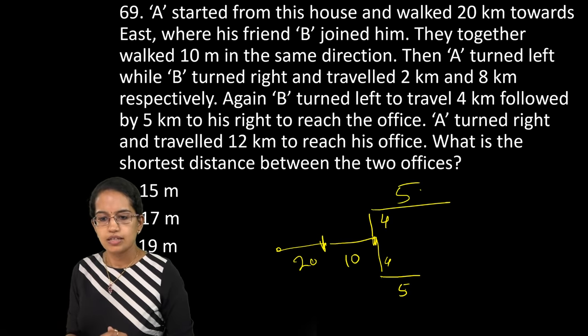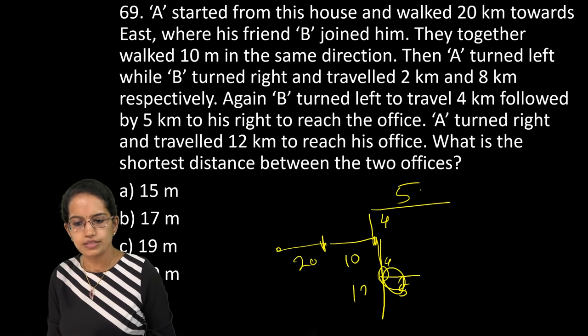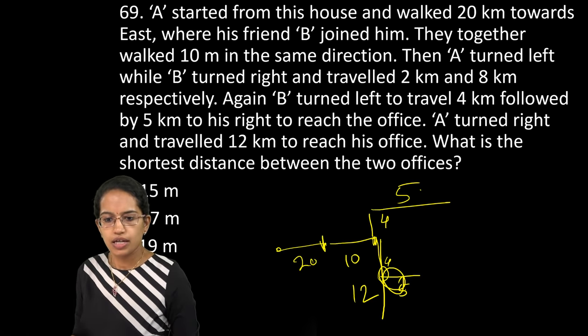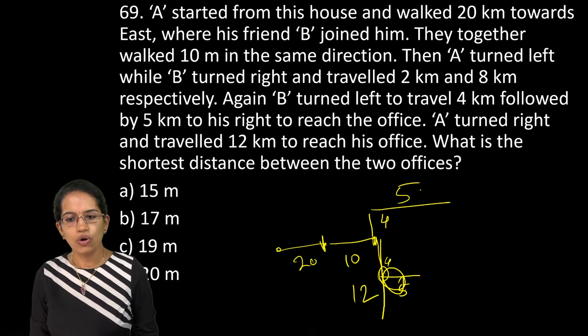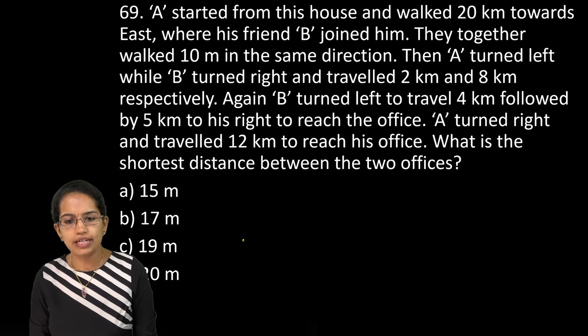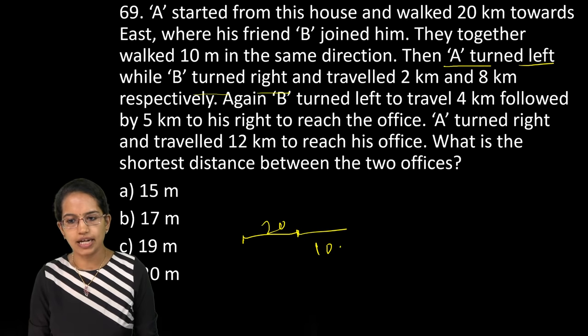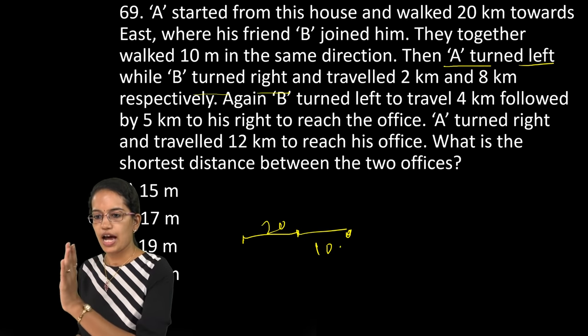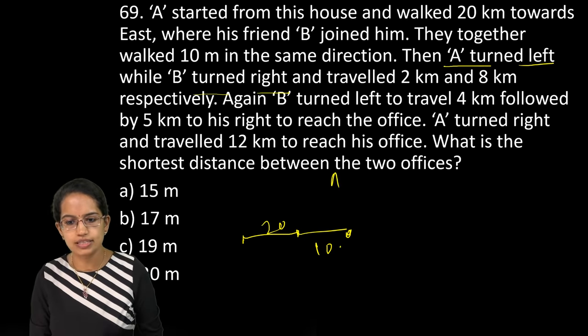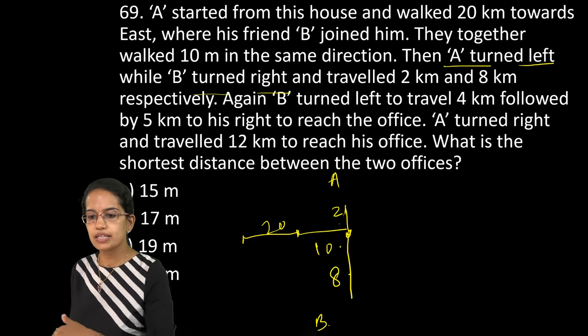He travels 4 km followed by a right that is 5. So A turns to the right, to the right and travels 12 km. Then he reaches the office. So just a second. There was one line that was missed. They travel 20 km and then 10 km. I missed this line.